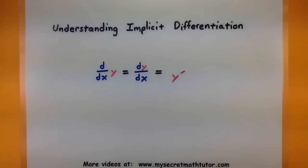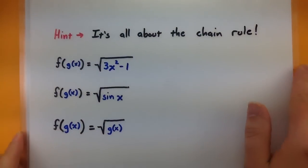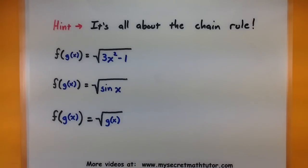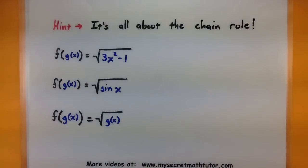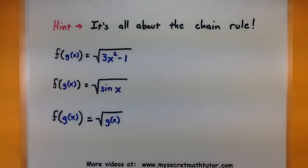Now, if you've seen this before you know that it can be a very tricky process, but I'll give you a really big hint on how this is going to play out. It's all about the chain rule. So we're going to do some simple problems involving the chain rule just to get our minds going on how the chain rule works, so that we can really understand that implicit differentiation part.